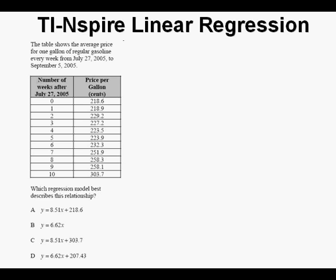Here's our next problem. I think it's an easier one. The table shows the average price for one gallon of regular gasoline every week from July 27, 2005 to September 5, 2005. Then it has the table relating time and gasoline prices. Then the question, which regression model best describes this relationship?